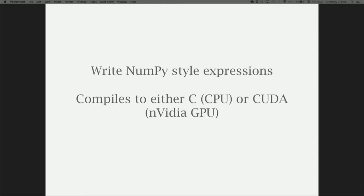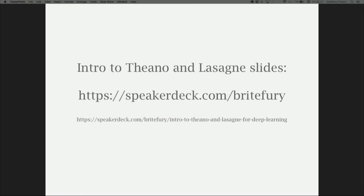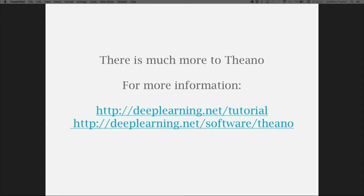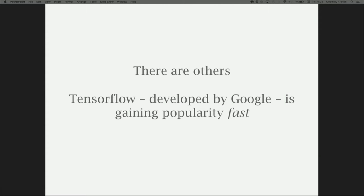Theano is an expression compiler. You write NumPy-style expressions and it compiles them to either C to run on your CPU, or CUDA to run on an NVIDIA GPU if you have one available. There's a lot more to Theano — check out the deeplearning.net website to learn more and find the full API description. There's also TensorFlow, developed by Google, which is gaining popularity really fast these days and may well be the future.